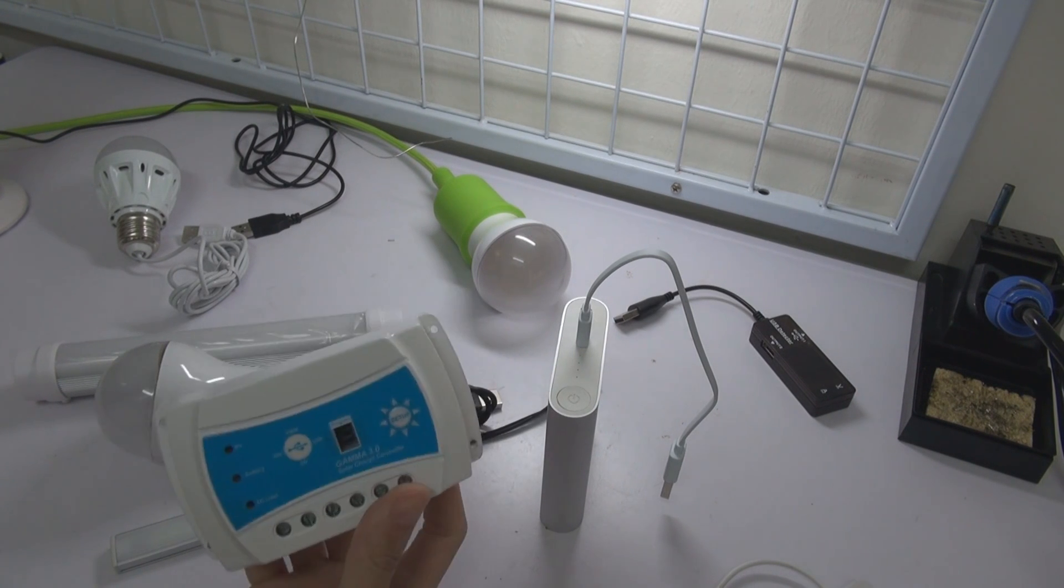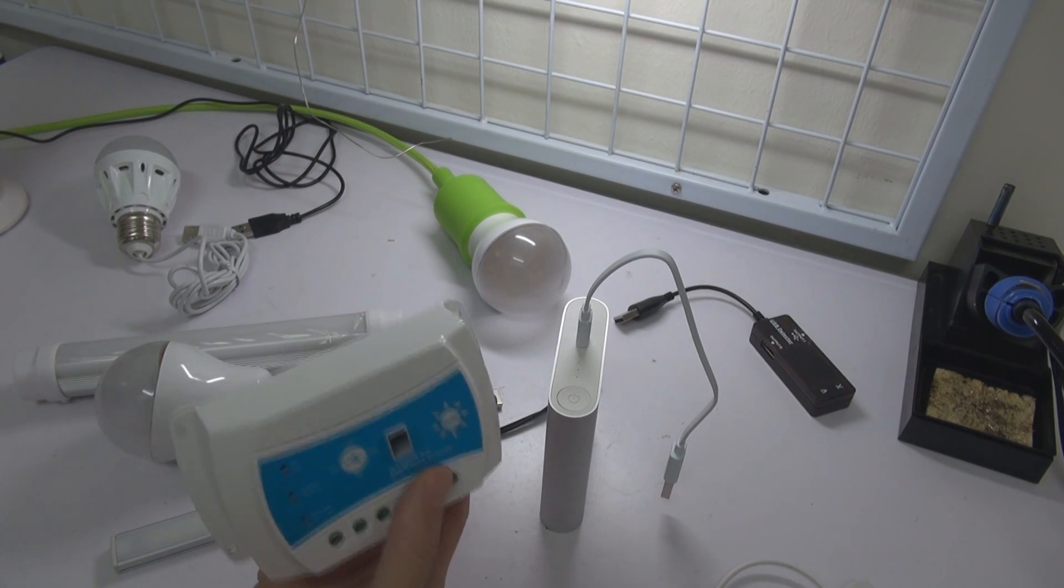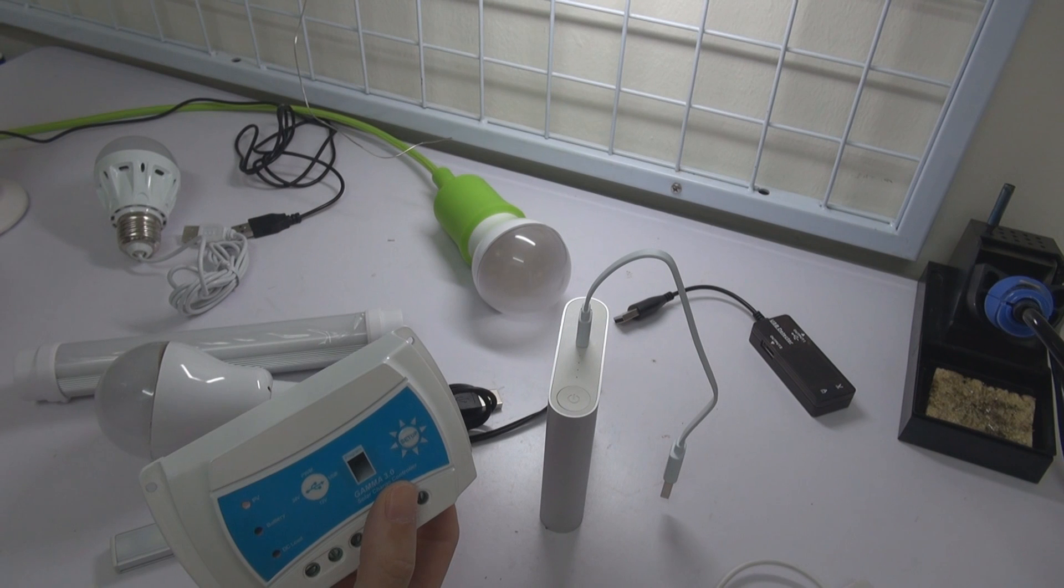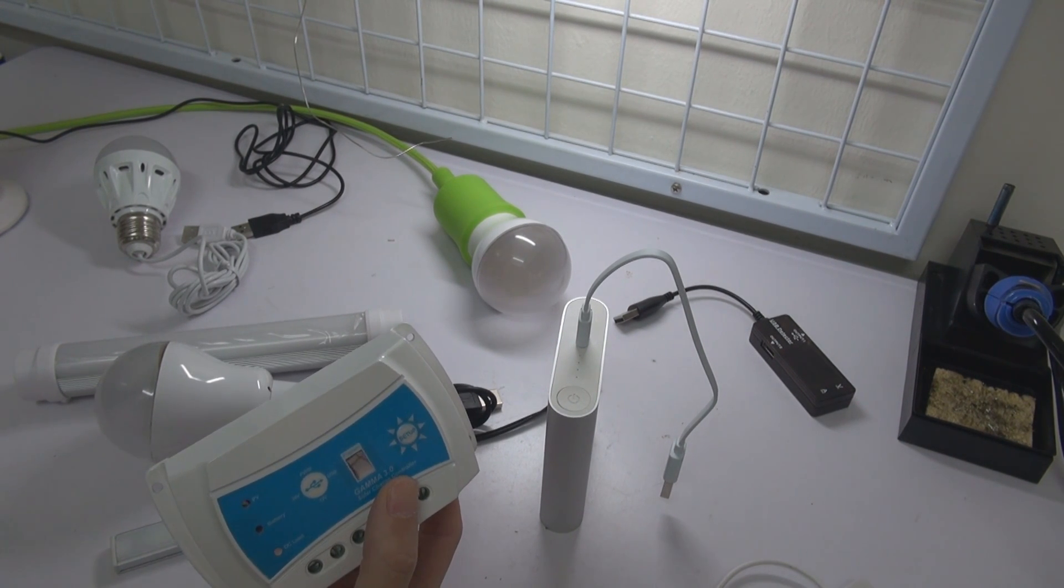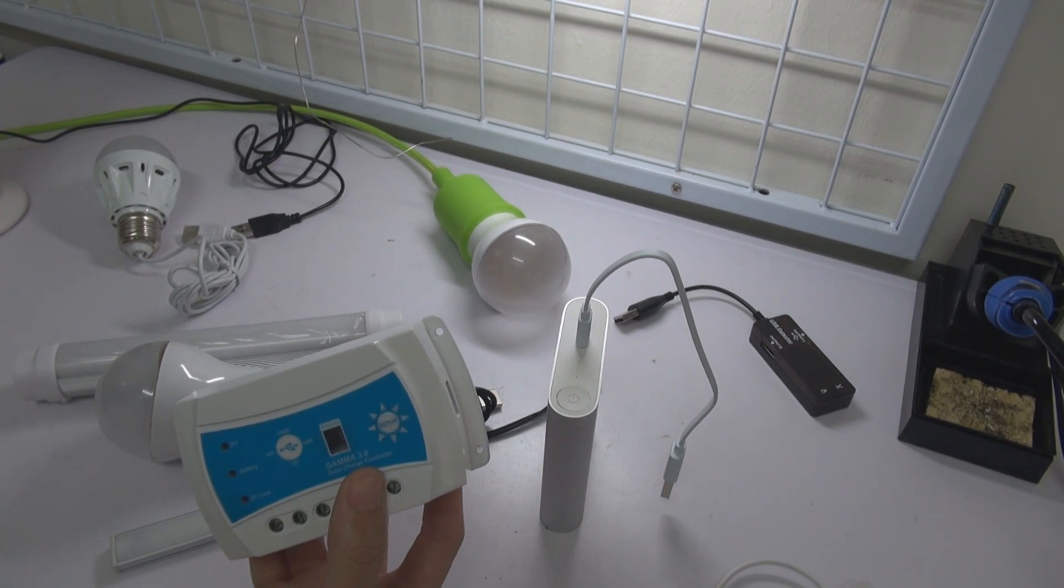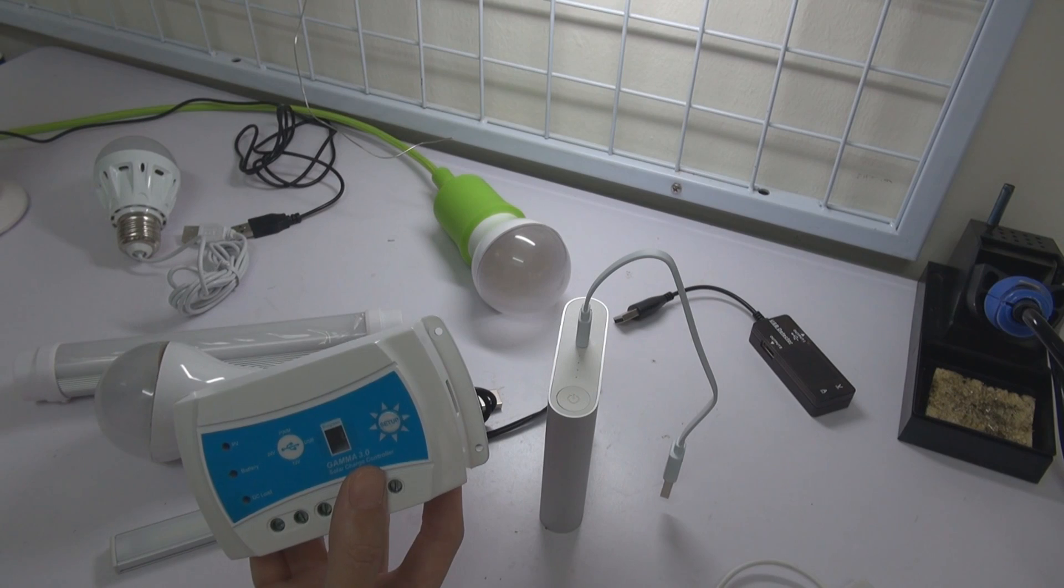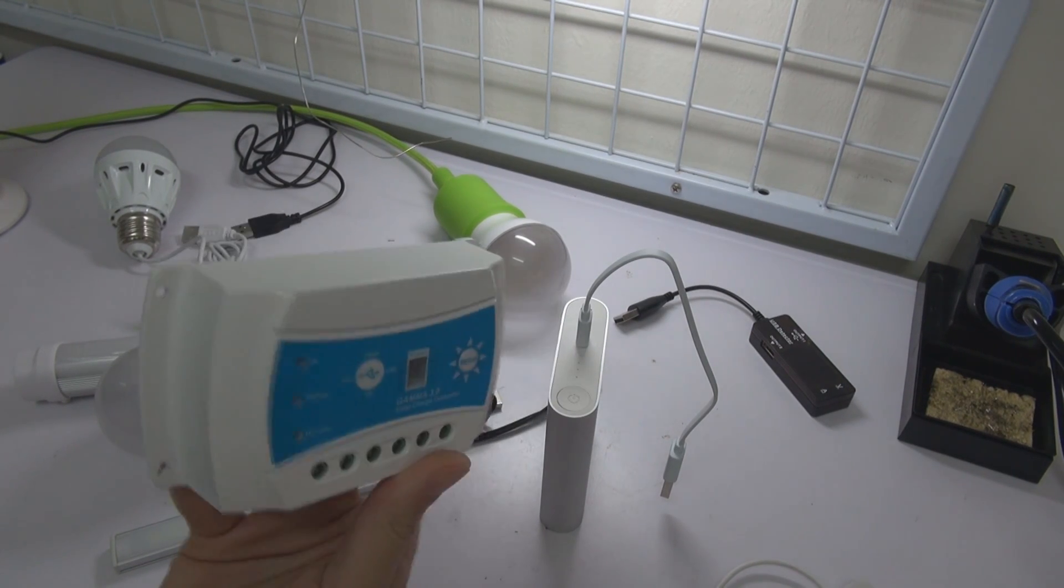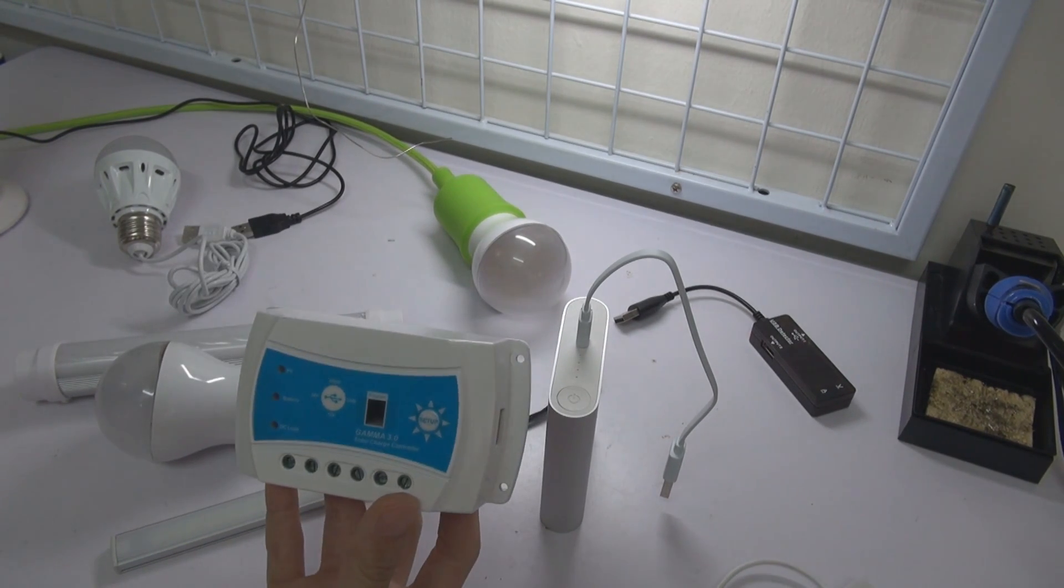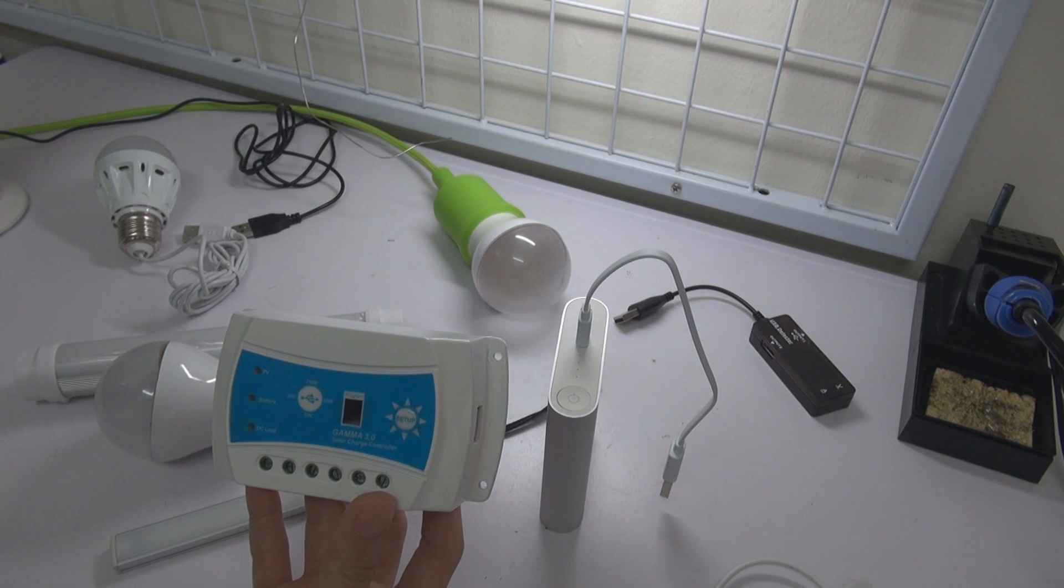The 2.0, for example, has two timer systems - timer 1 and timer 2.0 - and also more emphasizes equalization charge, especially for those using flood battery. Once a month or every three weeks, you need to do an equalization charge. But for the 3.0, we basically dropped the equalization charge.